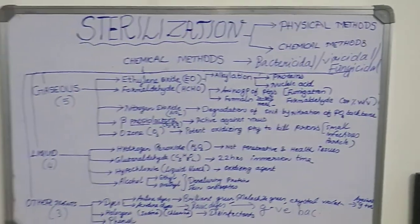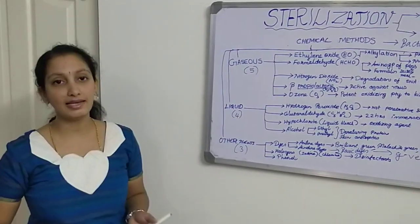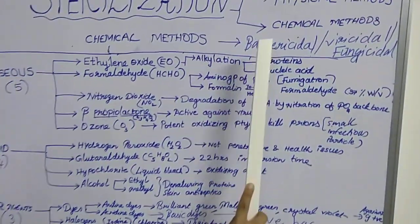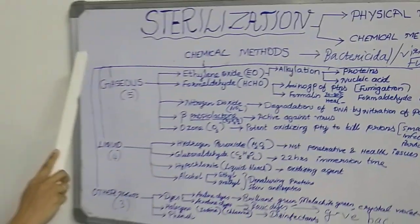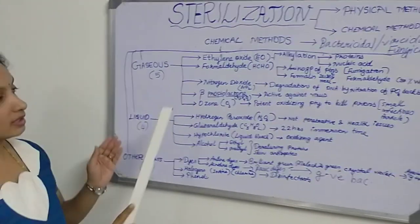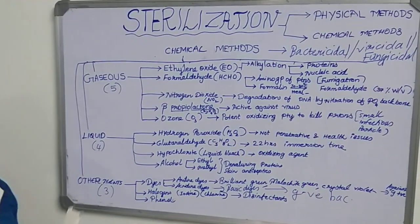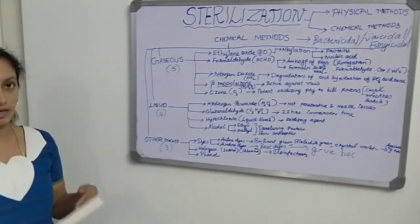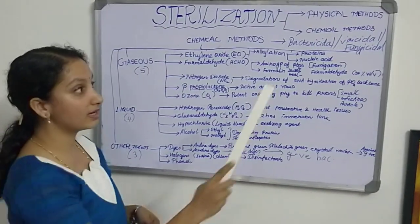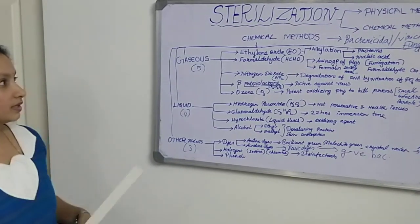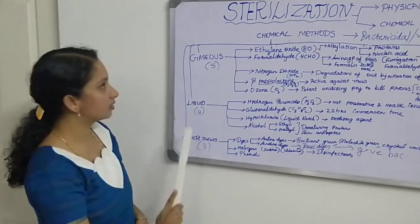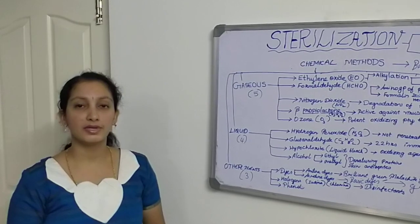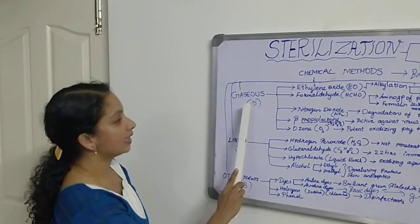In chemical methods, we use chemicals to kill or remove microorganisms. These chemicals can kill bacteria, virus, or fungus. Bactericidal means it can kill bacteria, viricidal means it can kill virus, and fungicidal means it can kill fungus. Under chemical methods, there are three main approaches — the first one is the gaseous method.